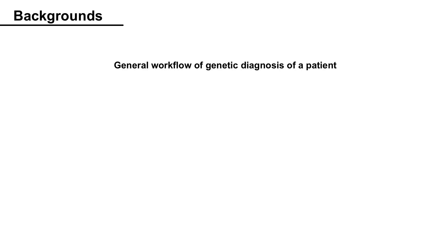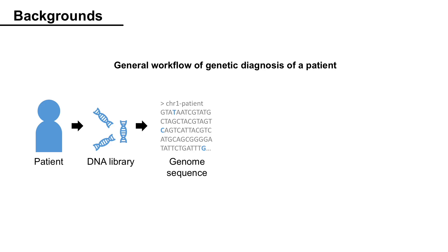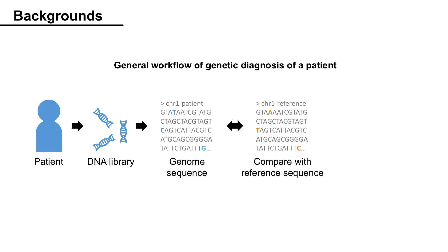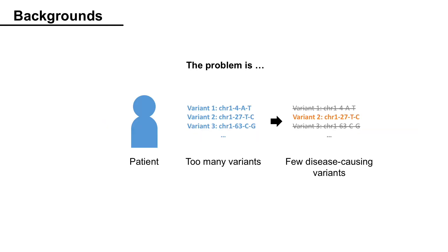Before we begin, there's something you should know. This is the general workflow of the genetic diagnosis of a patient. First, the DNA sample is collected and the genome sequence is determined. Then the sequence is compared to the reference genome sequence. The differences between the patient sequence and reference sequence can be identified as variants, or mutations. The problem is there can be hundreds of thousands of variants from each patient, and only a few of them contribute to disease occurrence.